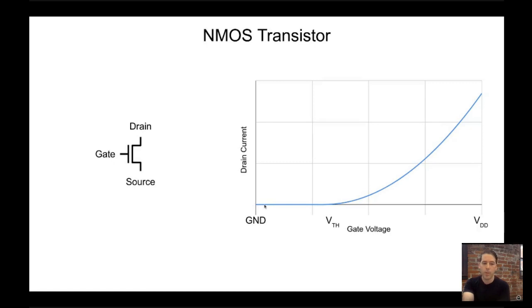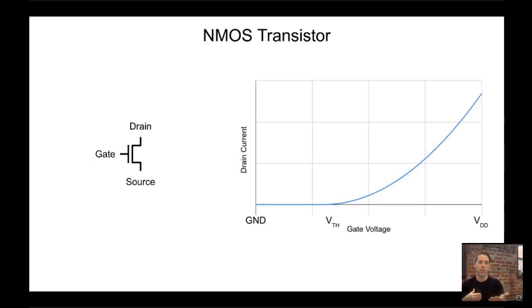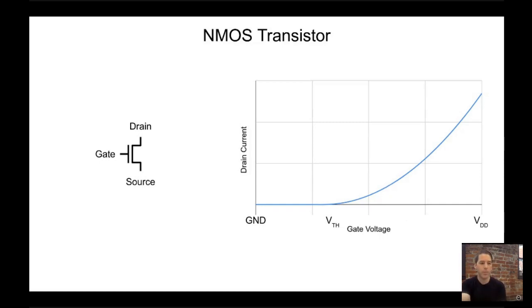As we increase the voltage continuously from low to high, at some point we cross the threshold voltage at which the channel between drain and source starts to become connected and allows current to pass. As we increase the voltage more, we see an exponential increase in current allowed to pass to the gate. So it's definitely not a linear device, but it can be modeled as a switch.